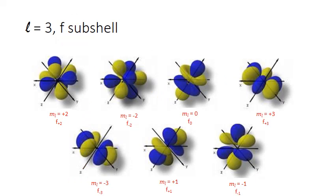The F orbital patterns are even more complex, with more lobes associated with the standing wave. At an angular momentum quantum number of 3, we have seven possible orientations, or seven different orbitals associated with the F shape. This is known as an F subshell, because all seven coexist and overlap within the atom, and electrons in the F subshell will be found spread out amongst all of these different orbitals.